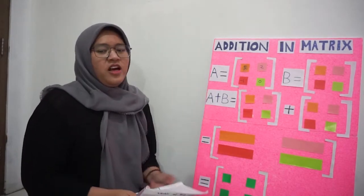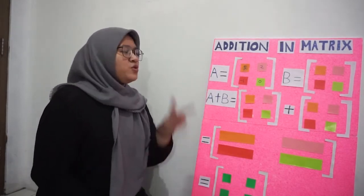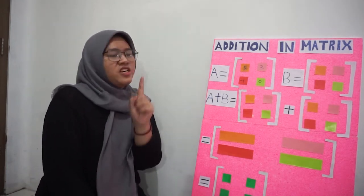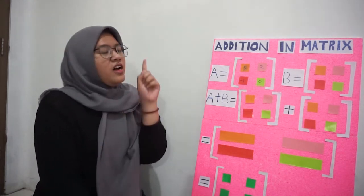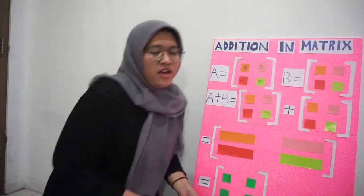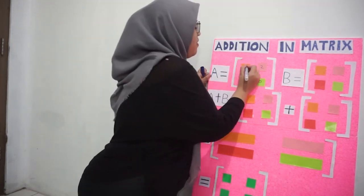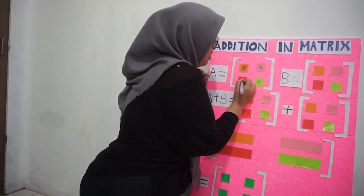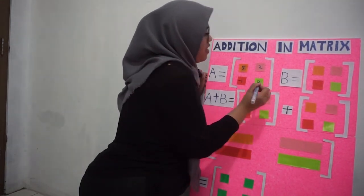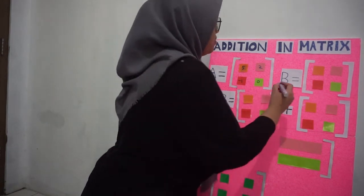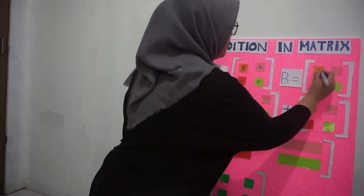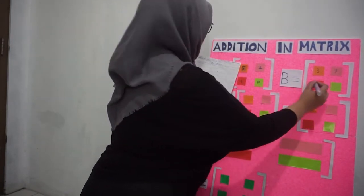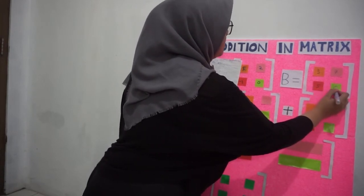Now let's look at addition in matrix. Addition in matrix has 2 rules. First rule: addition in matrix can be done only if the matrices have the same order. Let's say we have matrix A: 5, 2, minus 1, 0; and matrix B: 3, 7, 5, 6.